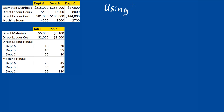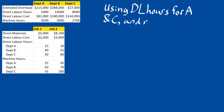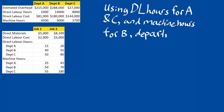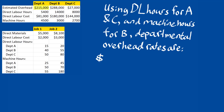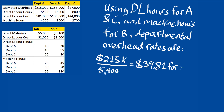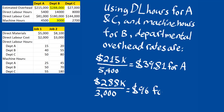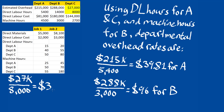Let's approach this example from another direction by using departmental rates. More specifically, let's use direct labor hours for departments A and C, and machine hours for department B. The departmental overhead rates are as follows: the overhead rate for department A is $39.81, derived by using direct labor hours as the denominator. Using machine hours as the denominator for department B, we determine that the overhead rate is $96. Repeating this for department C, the departmental overhead rate is $3.38.